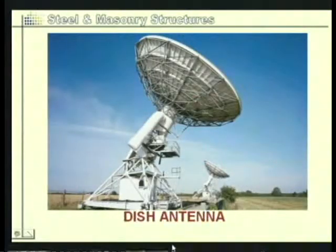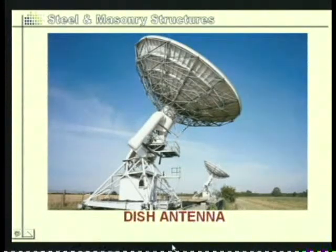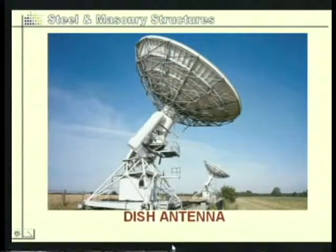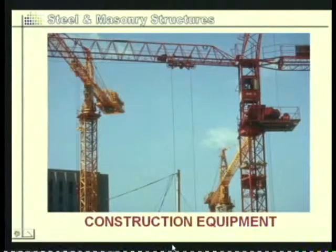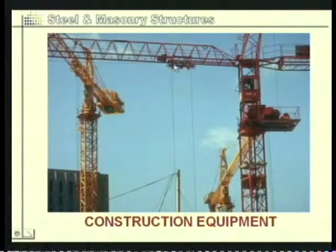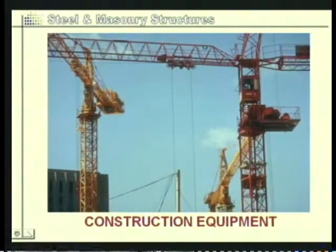This photograph shows a steel structure being used for a radar system or dish antenna. You can look at the members used and their connections. The next photograph shows equipment used for construction purposes, where there are a lot of steel members involved in the construction of this particular equipment.